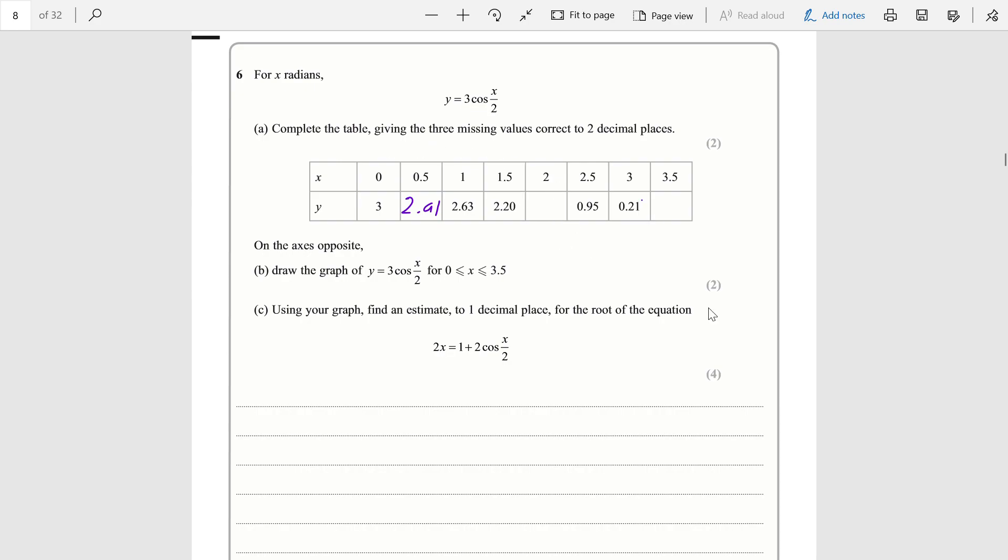Additionally, in most further pure questions where they're just giving you the trig function without any context, you can fairly safely assume that it's going to be in radians. So we have 1.18, and then 3cos(3.5)/2, which would be -0.53.